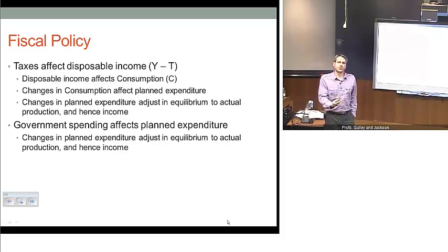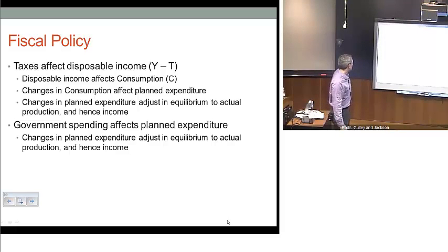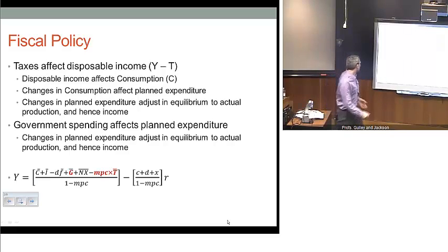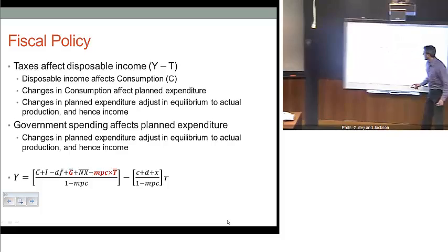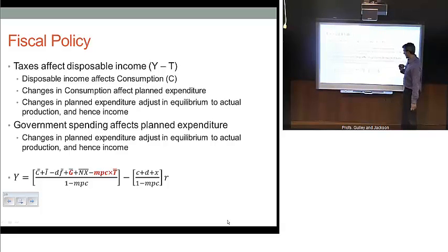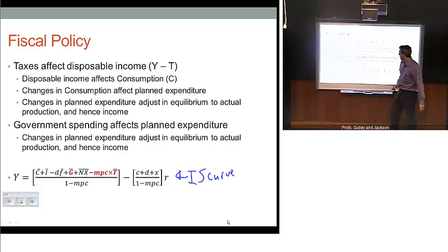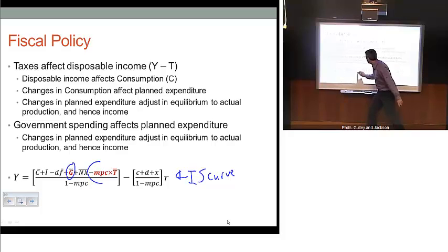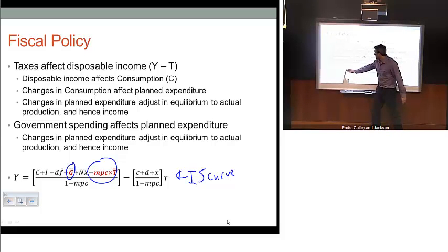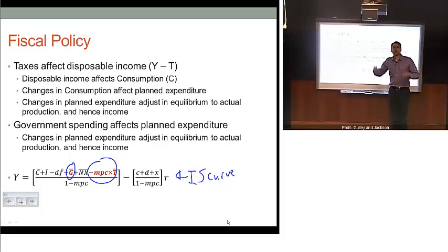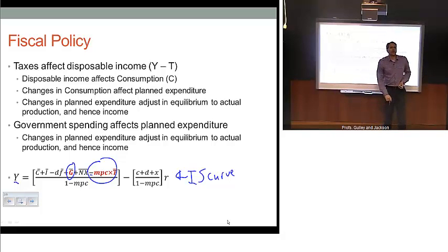If we look at government spending, it's a similar story but more direct — changes in government spending affect planned expenditures, which affects production and hence the level of income in equilibrium. Looking at the IS curve equation, those two fiscal policy factors — government spending and the tax effect — are visible right there. Government spending is additive: as government spending rises, planned spending overall increases, triggering firms to produce more goods, and income rises. There's a minus sign on the tax impact.